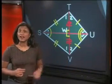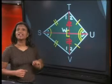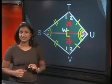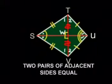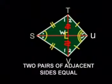Well, we have found some interesting things about the kite STUV. Let's recap what we've learned in this lesson. In a convex kite, two pairs of adjacent sides are equal.